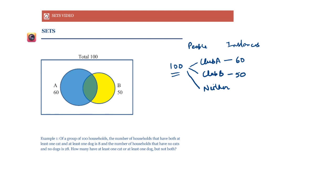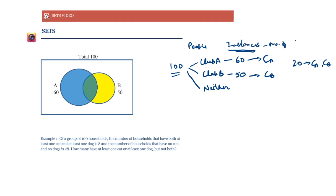What are instances? Let's assume that the clubs give membership cards. So these 60 people have been given a card A, and these 50 people have been given a card B. Now say 20 people belong to both clubs — those 20 people have two cards each: card A as well as card B.